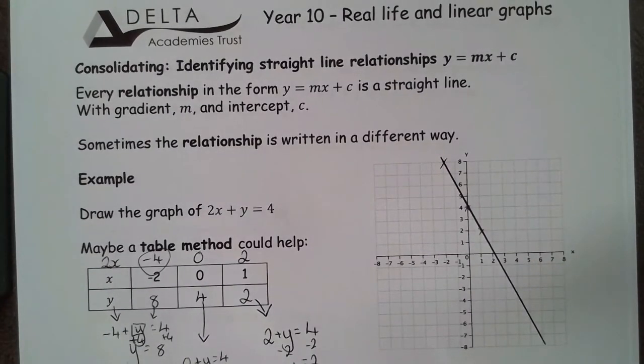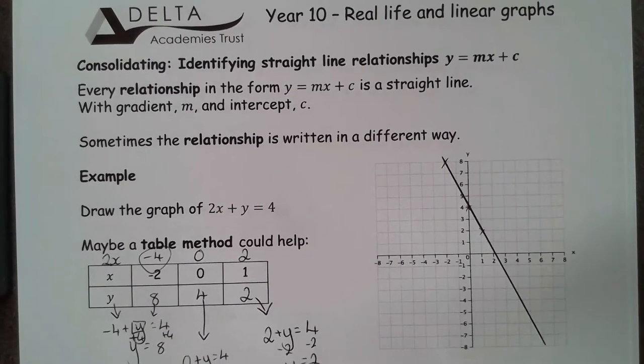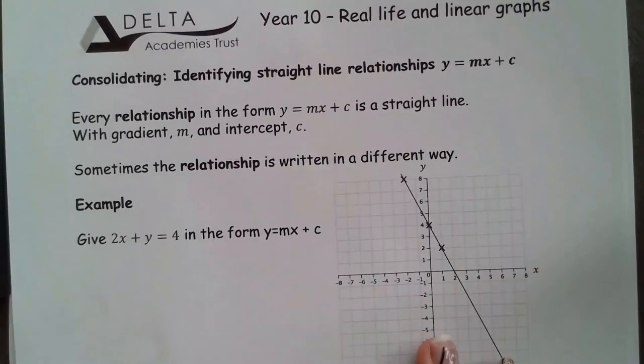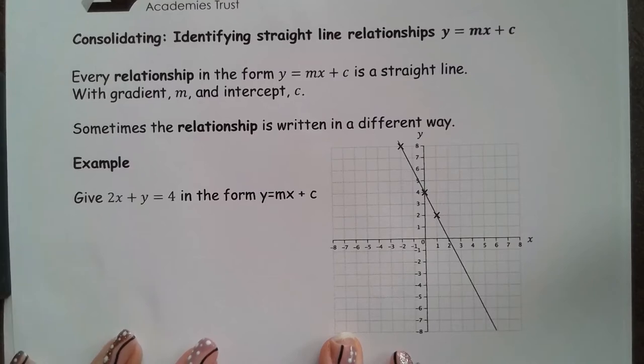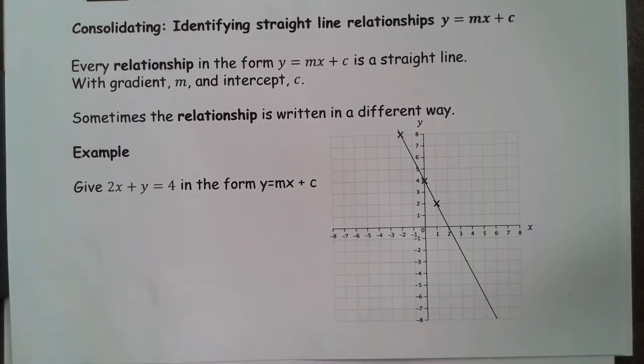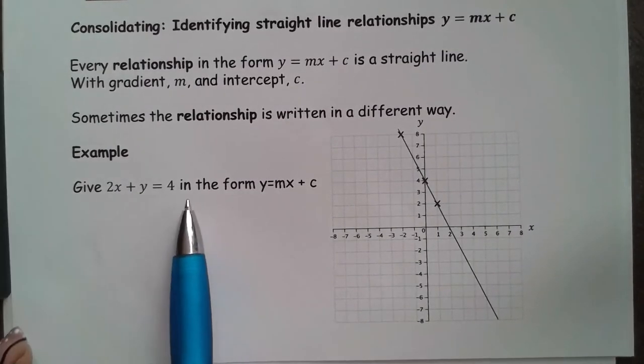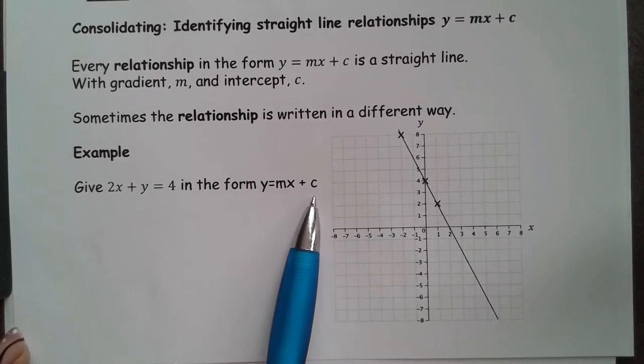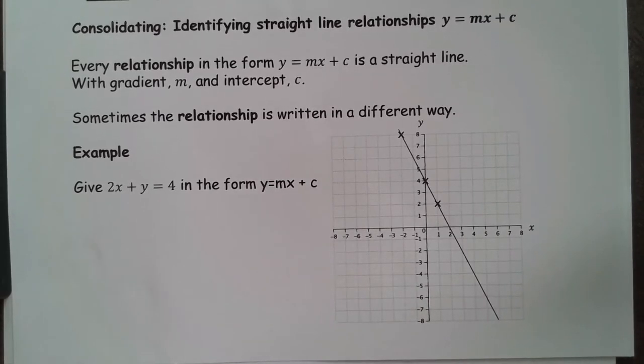There's a few ways we can tackle this now to try and find this in the form y equals mx plus c. We're going to need a little bit more room. So, there is our line and our coordinates that we've just drawn, already pre-done for us. What we're going to do now is bring this into the form y equals mx plus c. There's a few different ways we can do this. I'm going to start by doing it the way that we can use in our graph, which we're used to. And then we'll do it with a little bit of algebra.